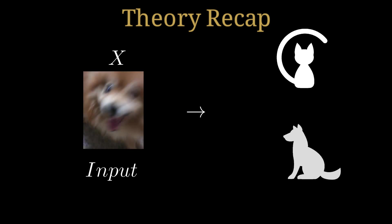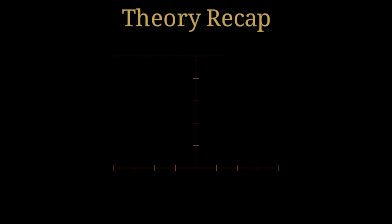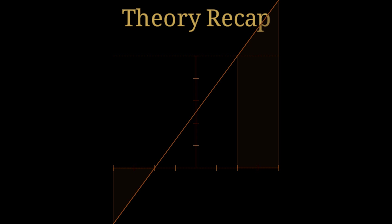Imagine an input X, a pet picture for example, and we want our model to predict if it's a cat or a dog. Using the linear regression equation, we will result in some random number like 10 or minus 3. This clearly doesn't mean a cat or a dog.